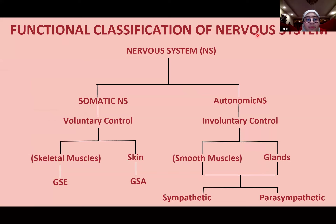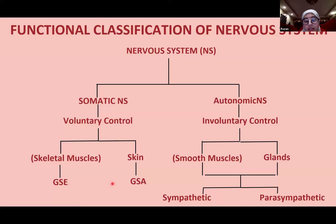Functionally, the nervous system is classified into the somatic nervous system and the autonomic nervous system. The somatic system involves voluntary control — things you control yourself, such as skeletal muscles and skin. The autonomic system involves involuntary control of smooth muscles and glands, regulated by the sympathetic and parasympathetic divisions. You may also encounter the enteric nervous system, covered next semester in the GI block.